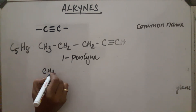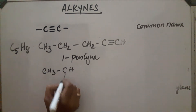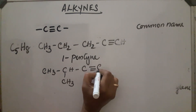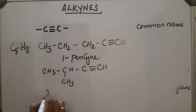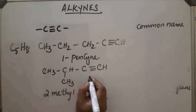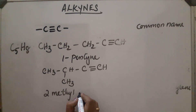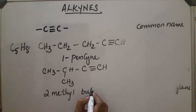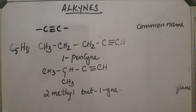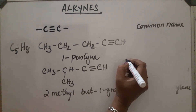The branched isomer has the structure CH₃–C≡C–CH with a methyl branch, giving 2-methylbut-1-yne. So, both chain isomers and straight-chain isomers are possible in the case of alkynes, which shows that alkyne exhibits chain isomerism.